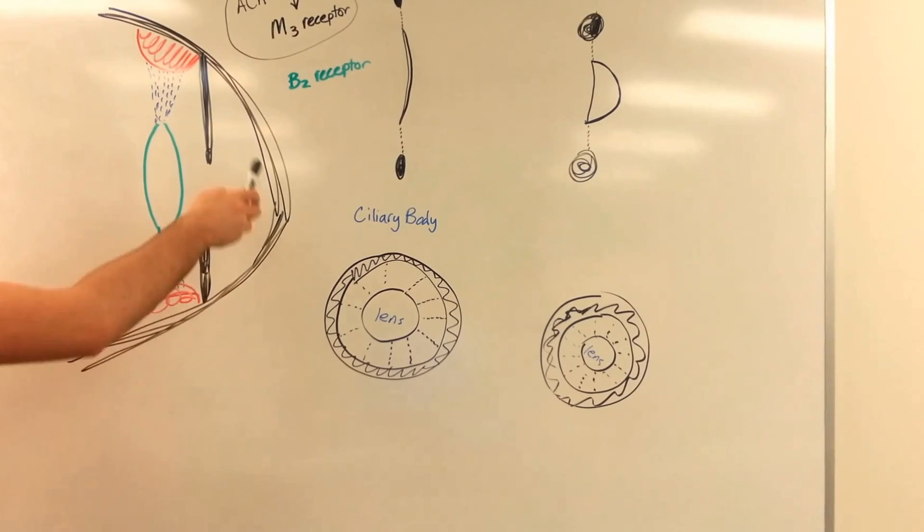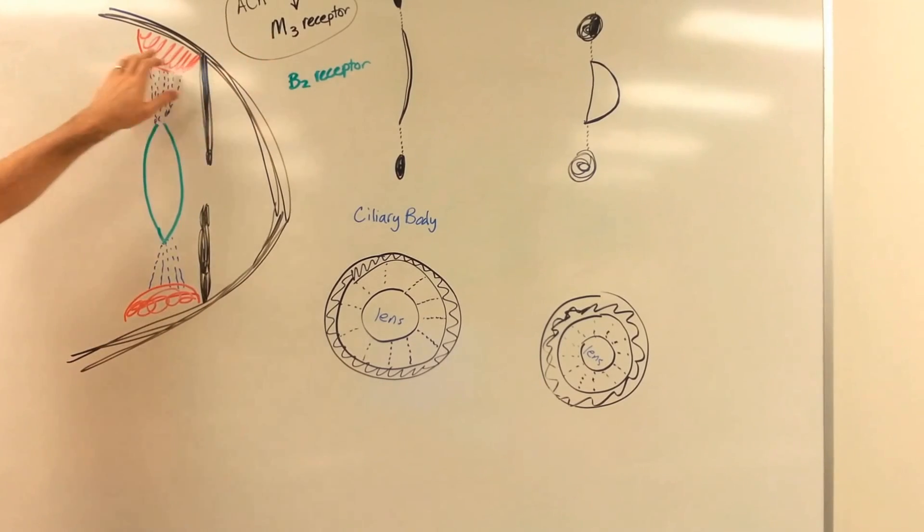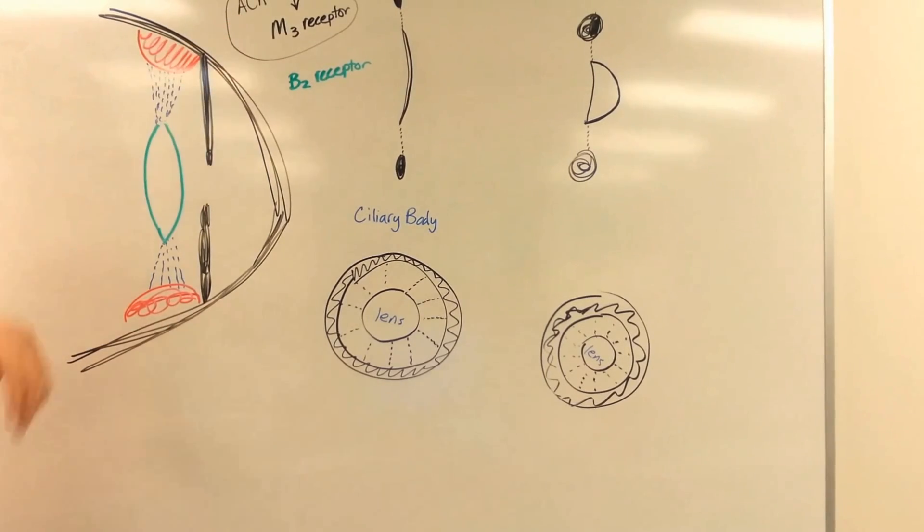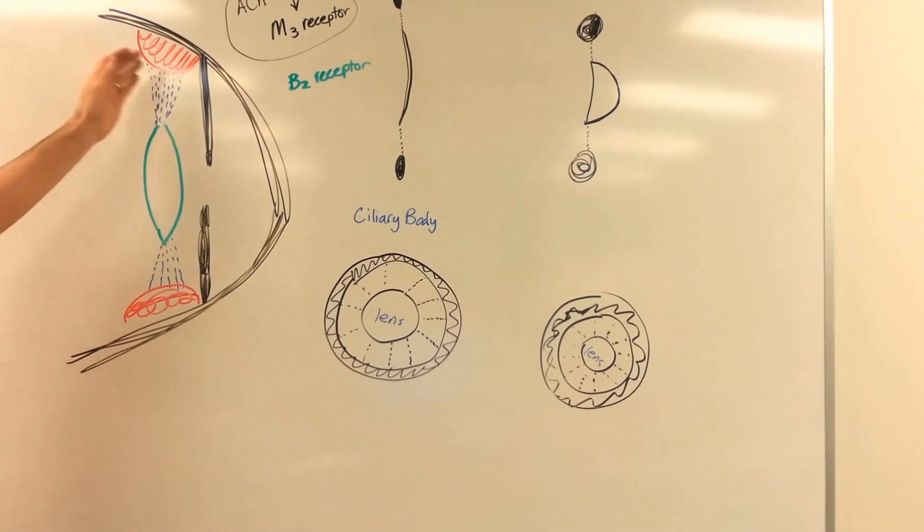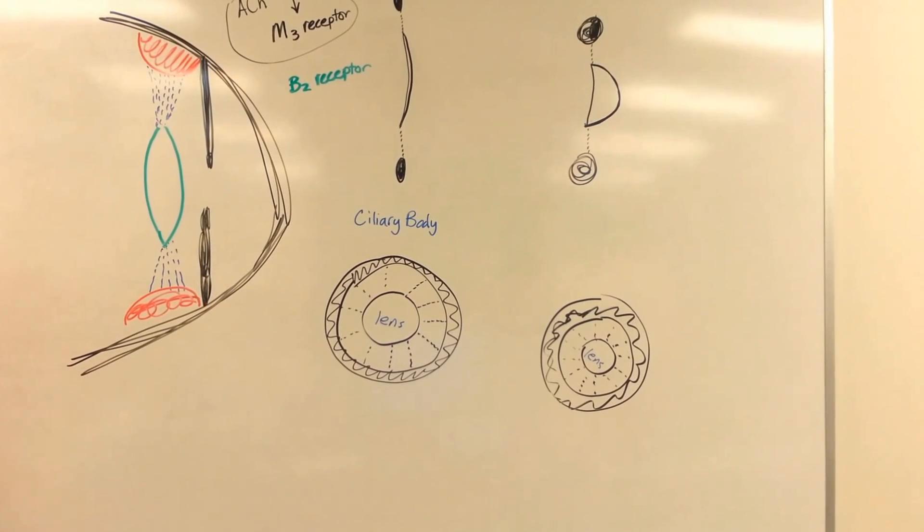So why do I have acetylcholine and M3 receptors? Well, it's important to remember that M3 receptors on the ciliary body are going to respond to the neurotransmitter acetylcholine. Acetylcholine is going to come and it's going to act upon the M3 receptors that will be expressed here. And that's going to cause the accommodation to near vision.